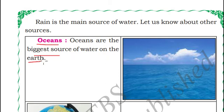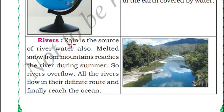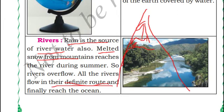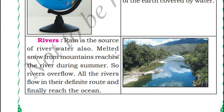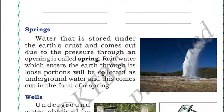Rainwater is also one of the sources of river water. Even melted snow from mountains could be one of the sources of river water. Every river eventually meets the ocean. Springs — water that is stored under the Earth's surface or Earth's crust — comes out due to high pressure. These are known as springs.